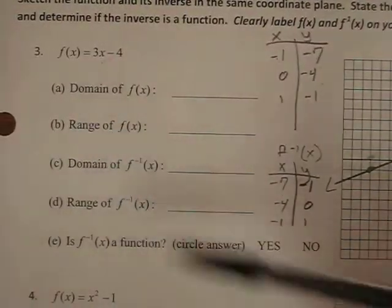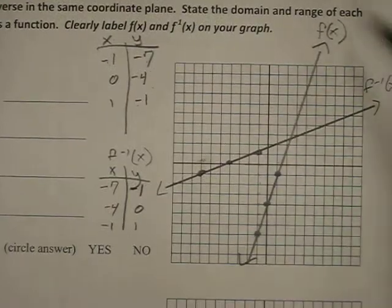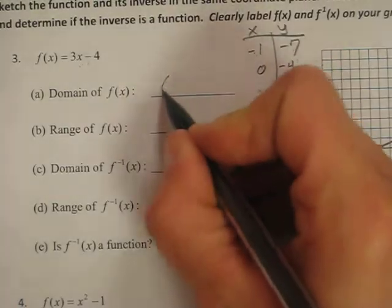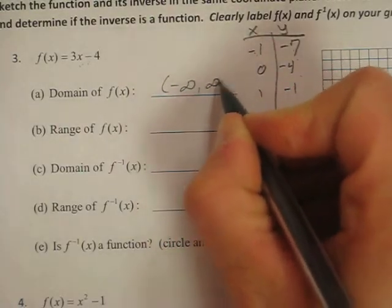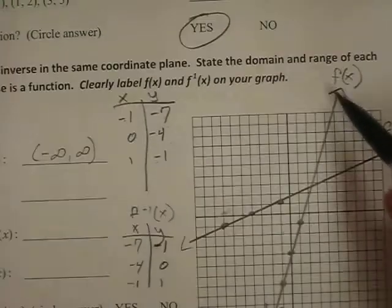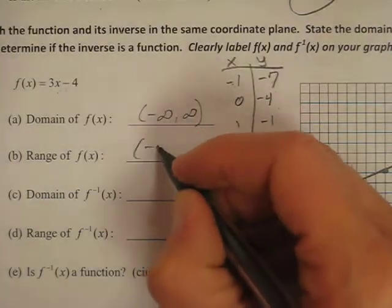For the domain of f(x), it's a line. Any linear function will always have the domain of all real numbers. The range is negative infinity to positive infinity, so the same thing.